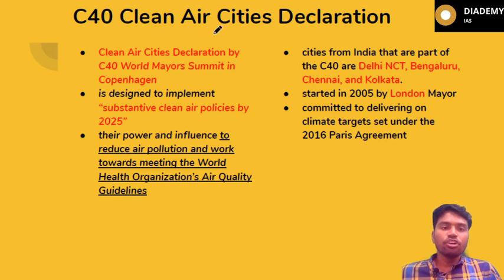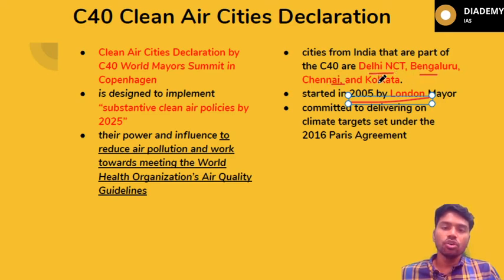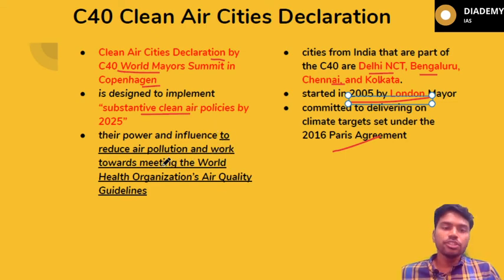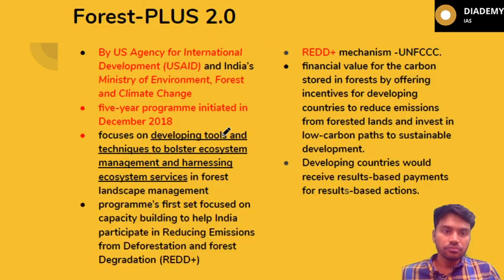The C40 Clean Air Cities Declaration was started in 2005 by the London Mayor. From India, presently four cities are part of this: Delhi, Bengaluru, Chennai, and Kolkata. These cities are also contributing to the 2016 Paris Agreement. The Clean Air Cities Declaration was given at the C40 World Mayors Summit in Copenhagen. It is designated for implementing substantiated clean air policies by 2025, aiming to reduce air pollution and meet WHO health standards.